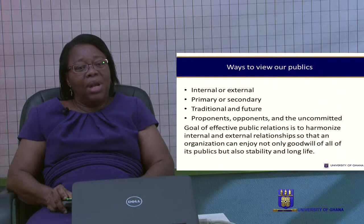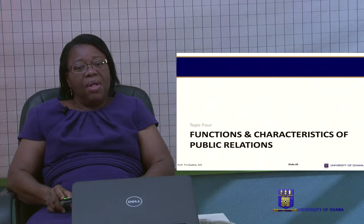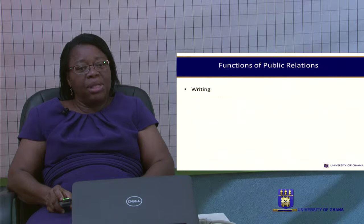The goal of effective public relations is to harmonize internal and external relationships, so that the organization can enjoy not only the goodwill of all its publics, but also gain stability and long life. Next, we're going to look at the functions and characteristics of public relations. After looking at these functions, you need to find out whether they are also applicable in the information environment.